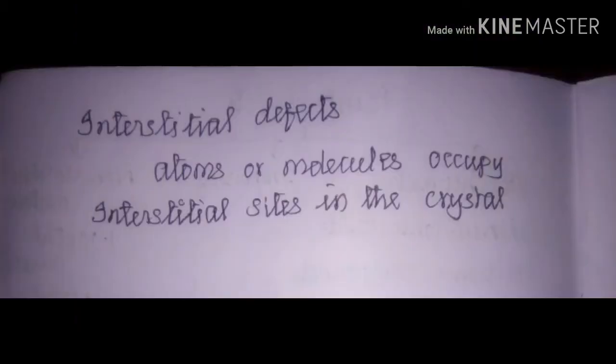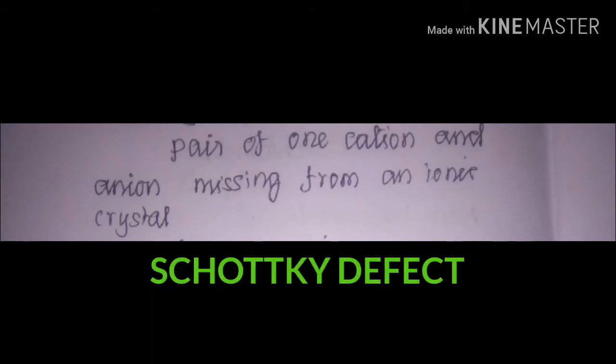Interstitial defects in non-ionic compounds are due to atoms or molecules occupying interstitial sites of the crystal while leaving their original position vacant. In ionic compounds, stoichiometric defects are of two types: Schottky defect and Frenkel defect.